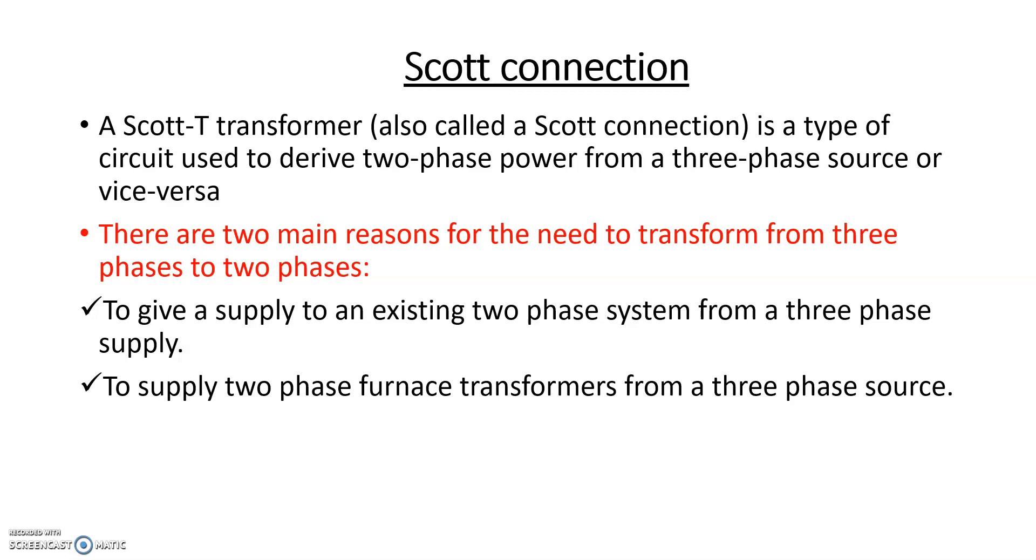In this, two transformers are required. One is called the main transformer and must have at least two primary and two secondary coils so that a center tap may be brought out from each side. The other transformer is called a teaser transformer and must have primary and secondary windings, the number of turns of which are 0.866 times the respective turns of the main transformer.